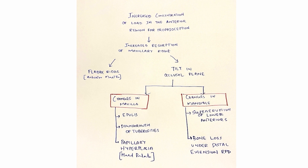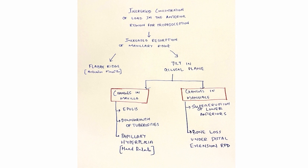Once you have this flowchart in mind, it is easy to write the definition, features, and sequence of events. Increased concentration of load in the anterior region leads to increased resorption of the maxillary ridge, which leads to a flabby ridge and tilt in the occlusal plane. This tilt leads to changes in both arches: in the maxilla — epulis, downgrowth of tuberosities, and papillary hyperplasia; in the mandible — supra-eruption of lower anteriors and bone loss under the distal extension RPD.